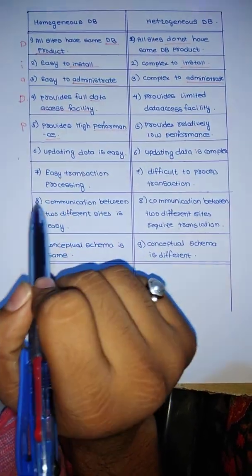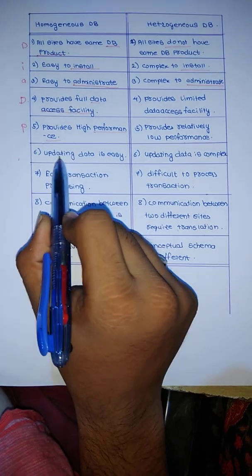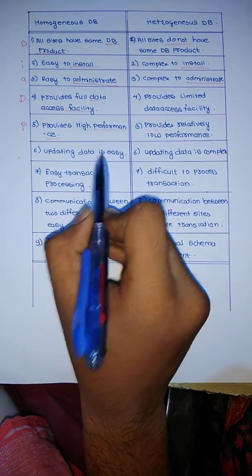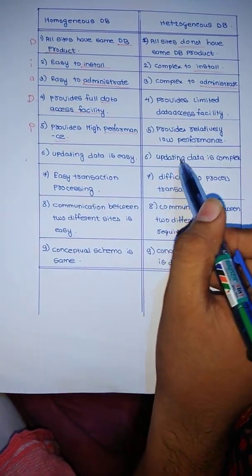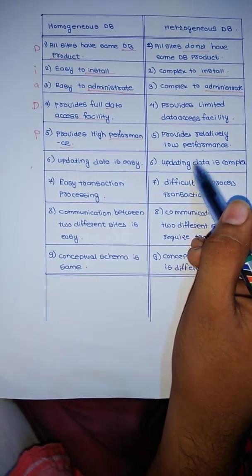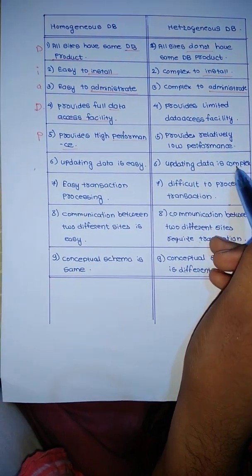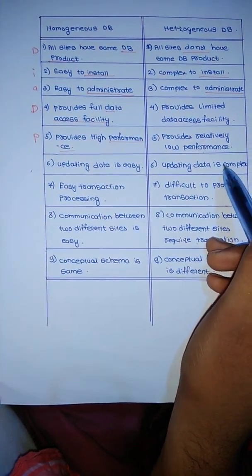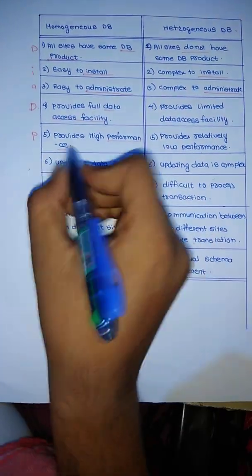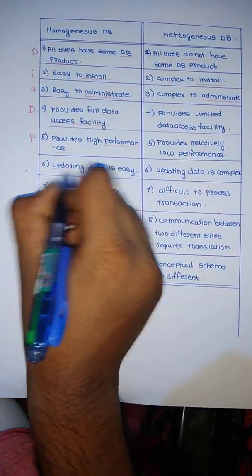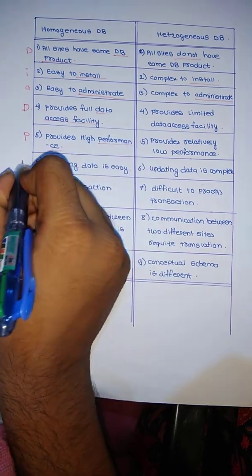Next, the keyword is updation. Updating data is easy in a homogeneous database, while in a heterogeneous database, updating data is complex — also because of synchronization. So the keyword is updating — U.